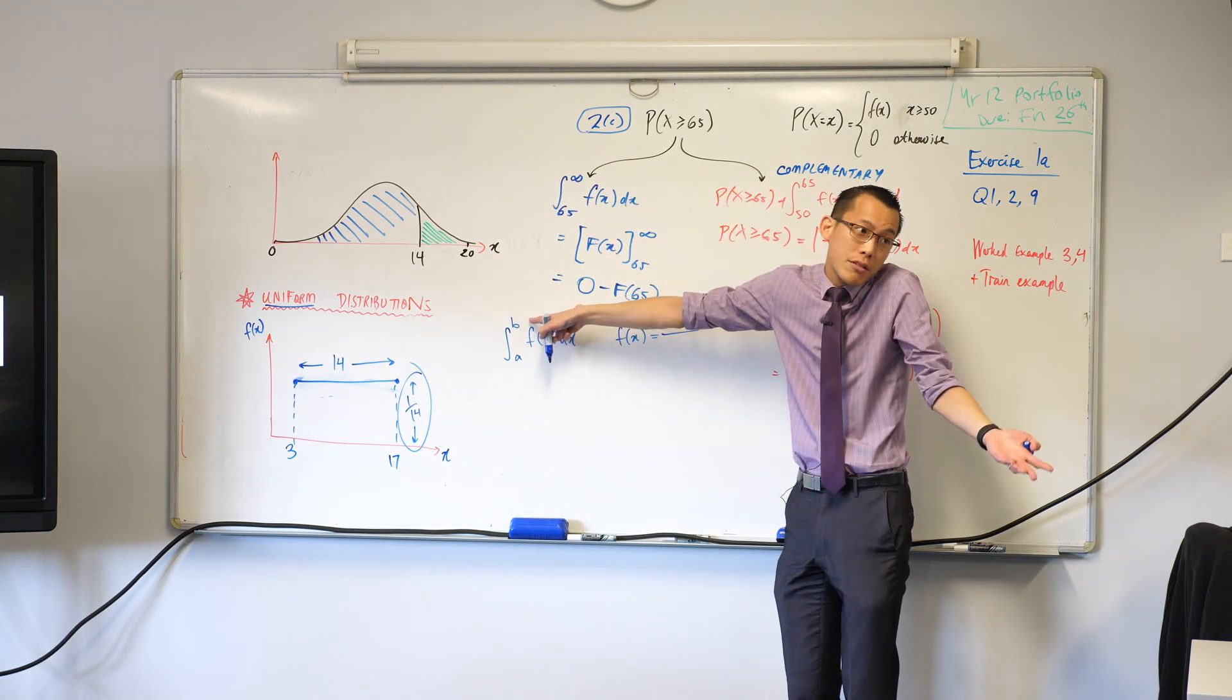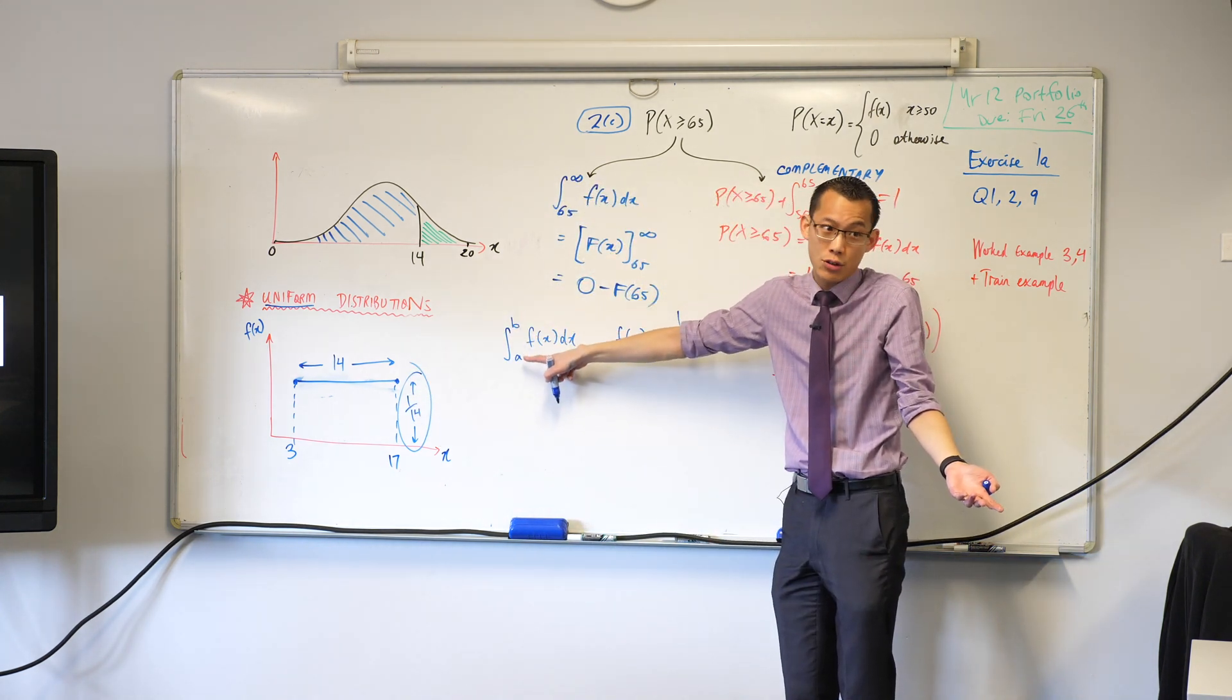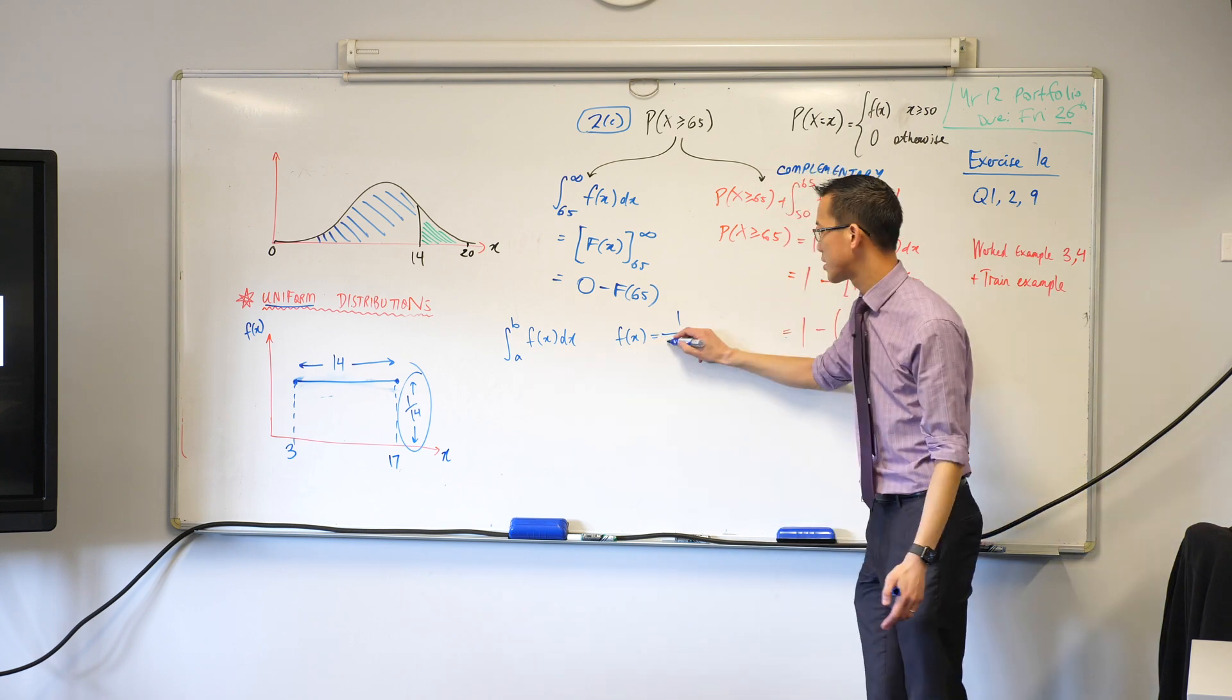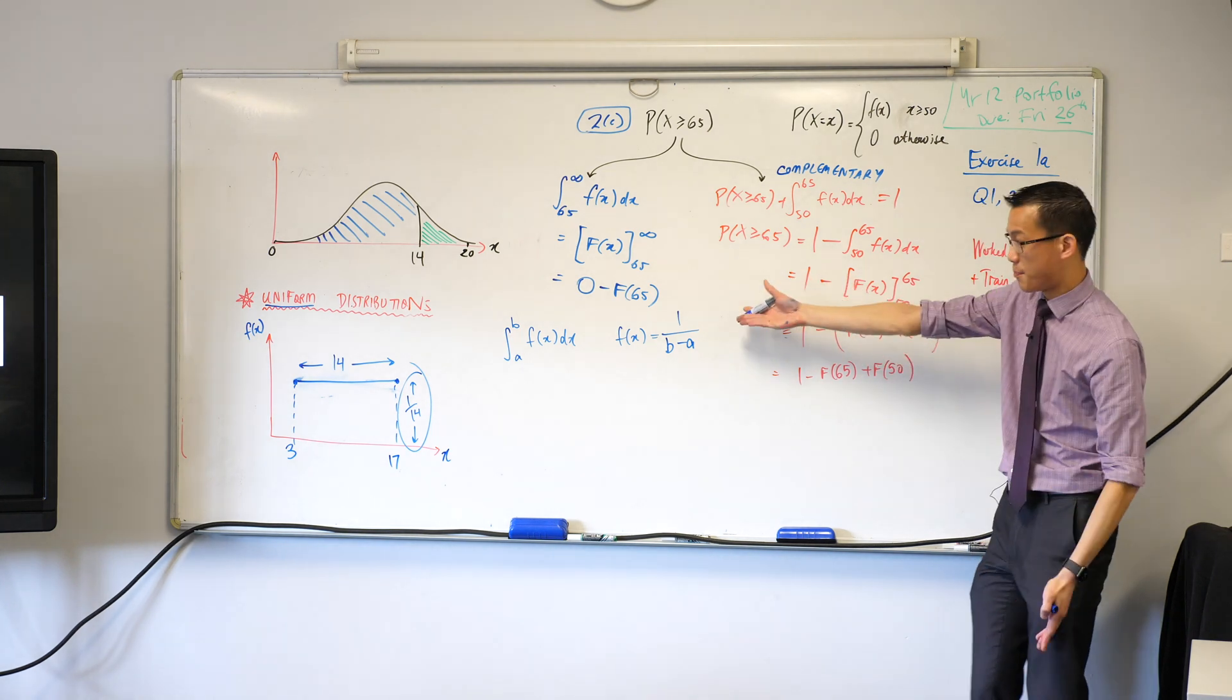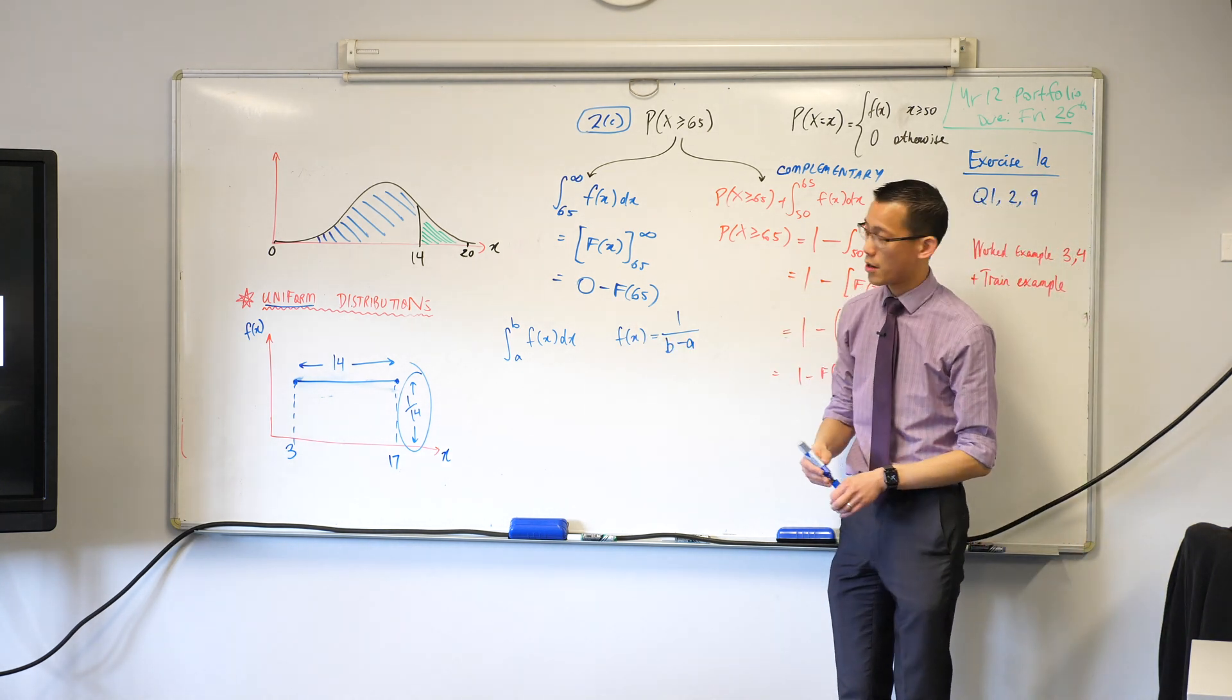So that's whatever your top boundary is, take away whatever your bottom boundary is. So we would say, top boundary, bottom boundary. Done. That's it. It's simple, simple, because it's a simple shape.